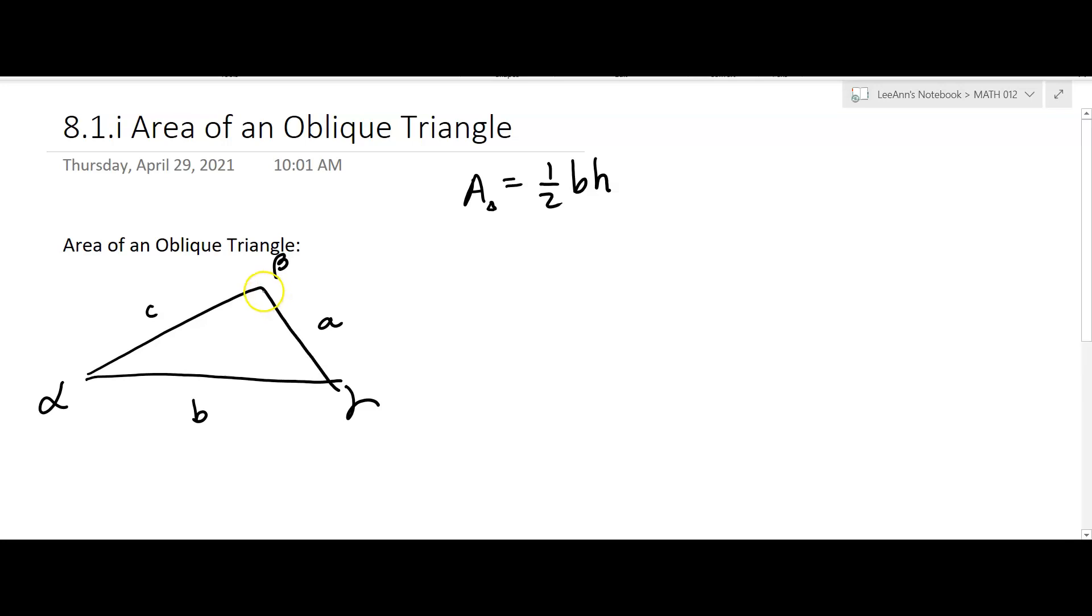and draw the height in. That makes a right angle right there, so this would be H. Well, if you don't know what H is, you can still find the area of the triangle. Let's say that we